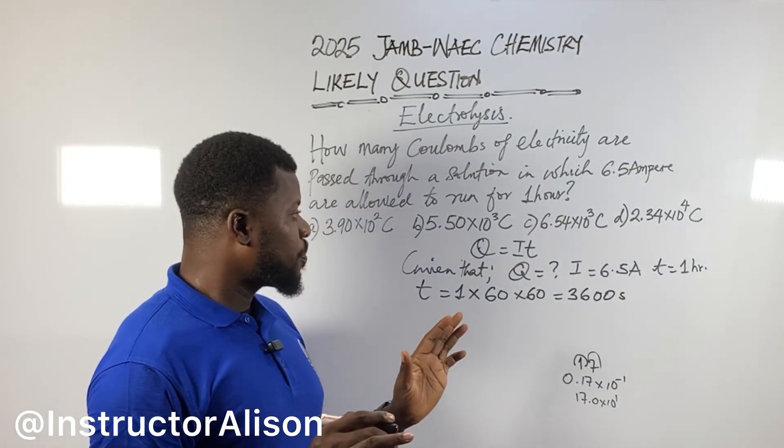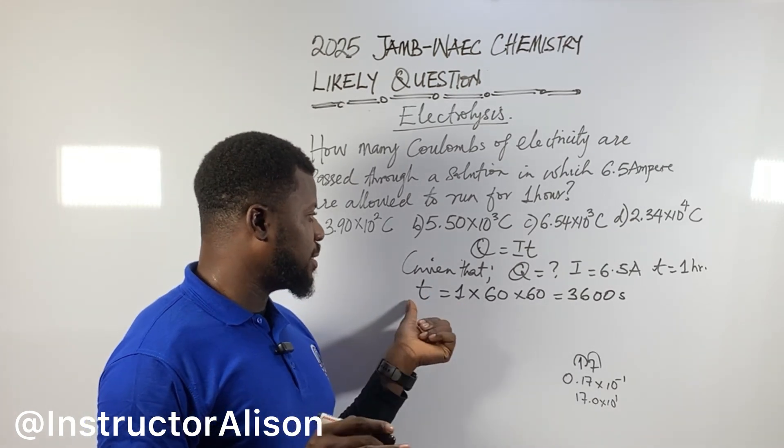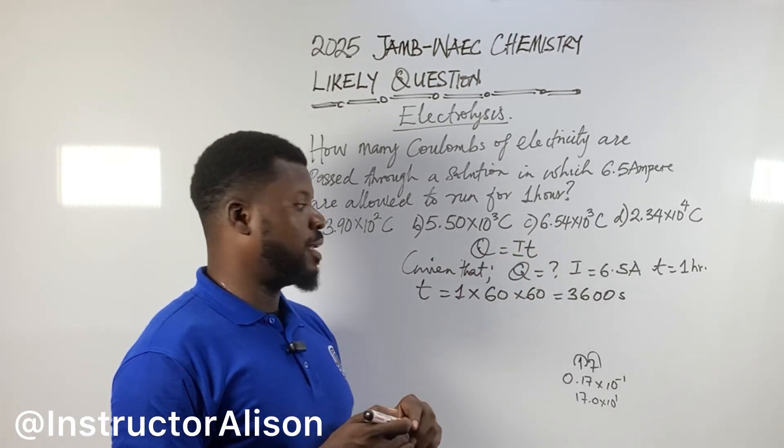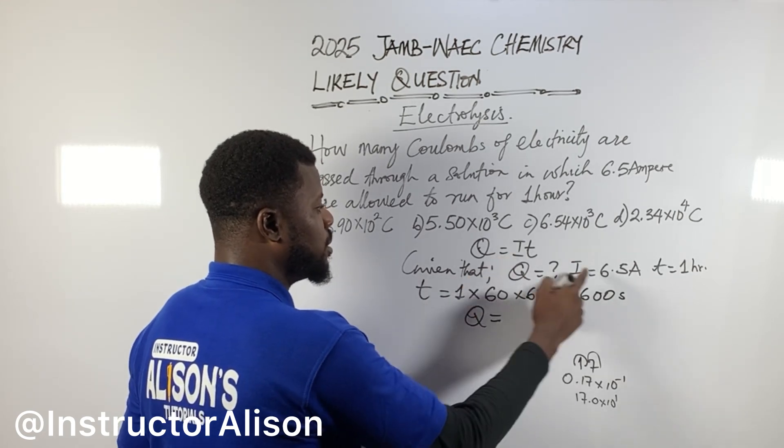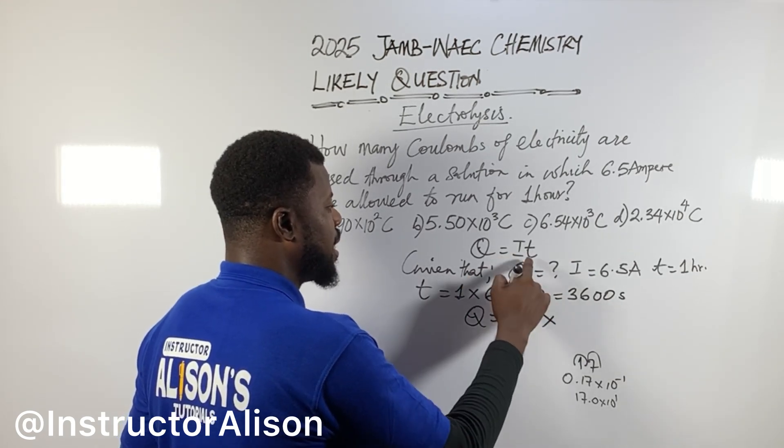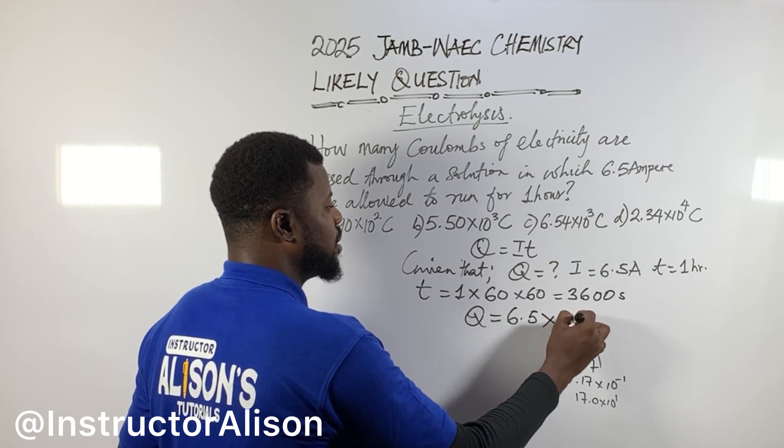So you're going to see Q will be equal to current which is 6.5 times time which is 3,600.